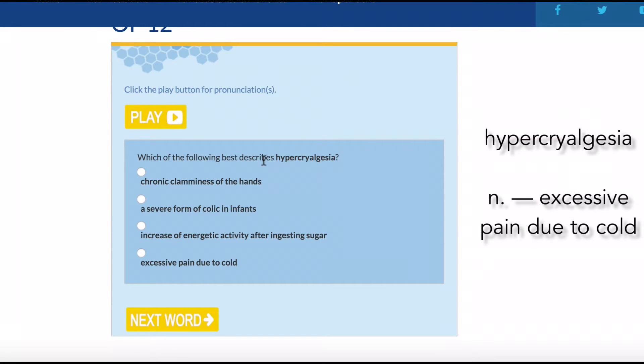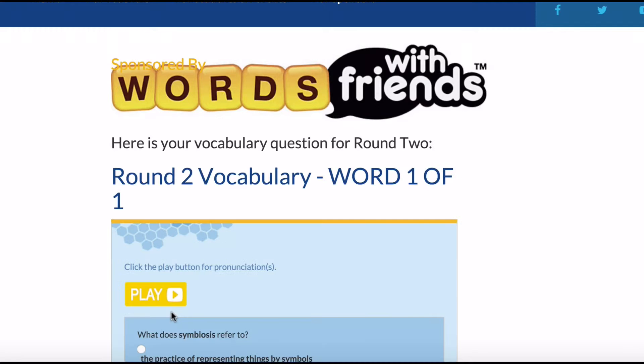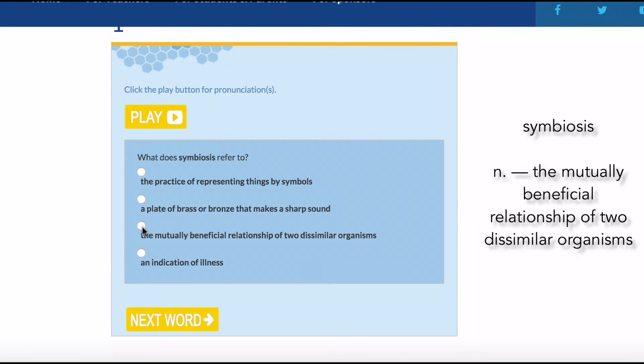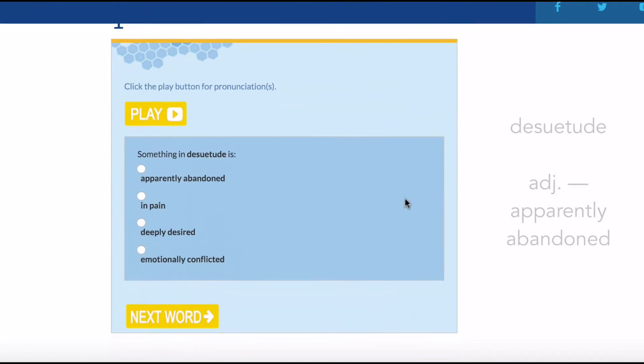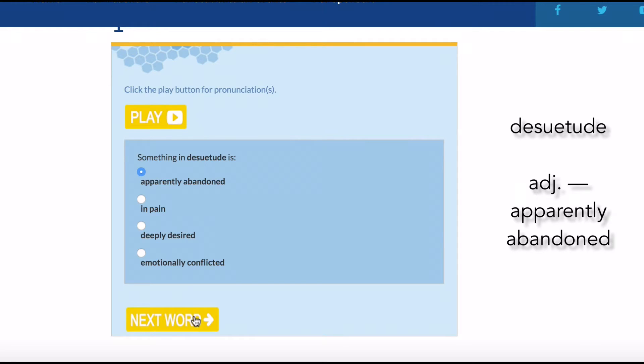And which of the following best describes hypercryalgesia is excessive pain due to cold? And what does symbiosis the mutually beneficial relationship of two dissimilar organisms, which is symbiosis, and desuetude is apparently abandoned?